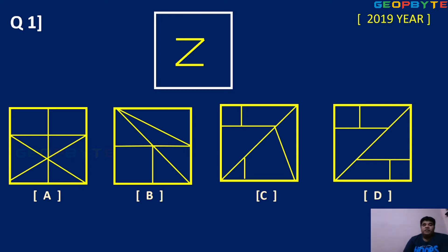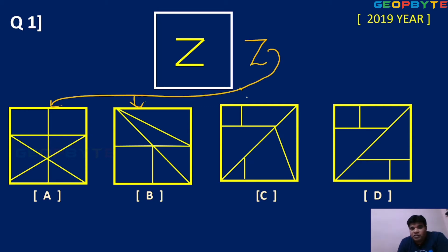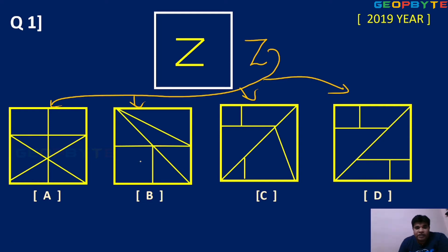First question: this is the question figure. What is the shape? It is almost looking like a Z. This Z shape should be existing in one of the four options. In option A, the Z shape is not possible — not in the first box, not in the line. So option A is wrong.